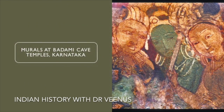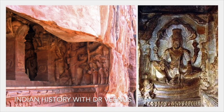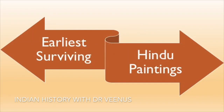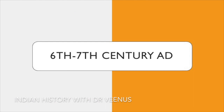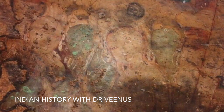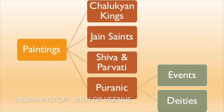The Badami Cave Temples in Karnataka, though famous for sculptures, also contain beautiful paintings. Murals at Badami Caves, belonging to the 6th–7th century AD, have lost their original grandeur but still offer a glimpse of the artistic capabilities of that era. They are among the earliest surviving Hindu paintings, resembling the tradition of Ajanta and Bagh. Human subjects have a graceful and compassionate look with big, half-closed eyes and protruding lips. Paintings depict Chalukyan kings, Jain saints giving up worldly life, Shiva and Parvati, Puranic events, and Dirtisara. Cave 3 still has a beautiful ancient mural showing four-armed Brahma on his swan.